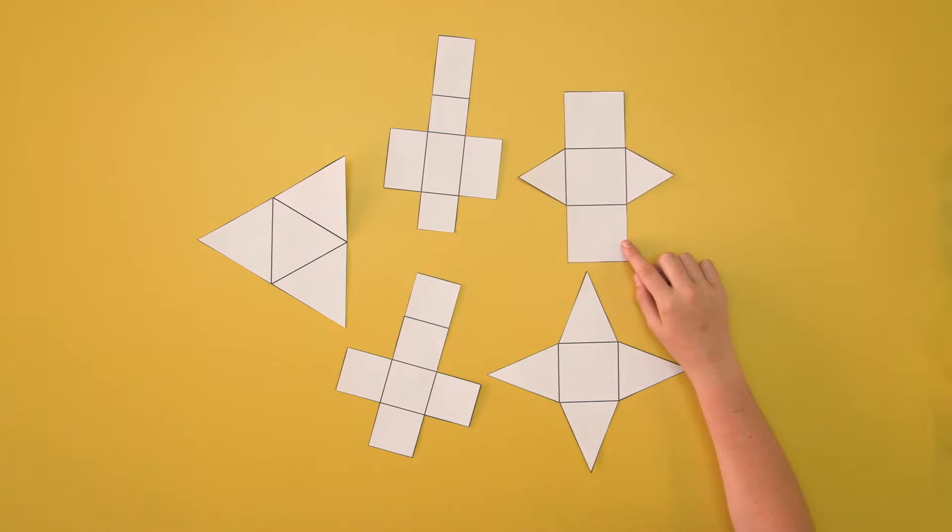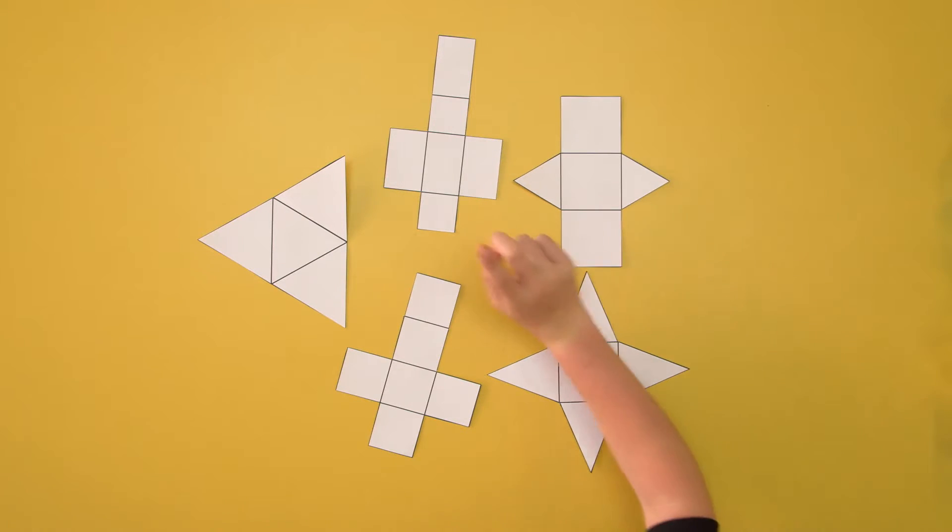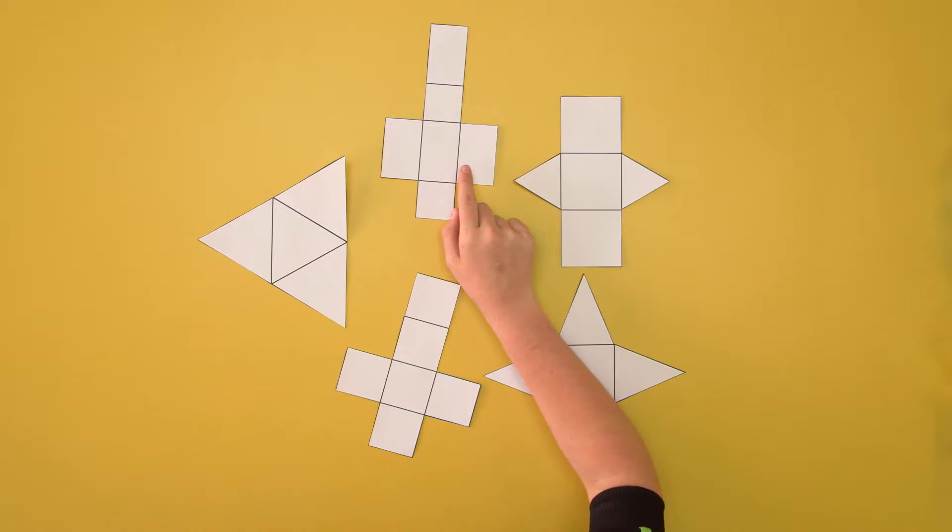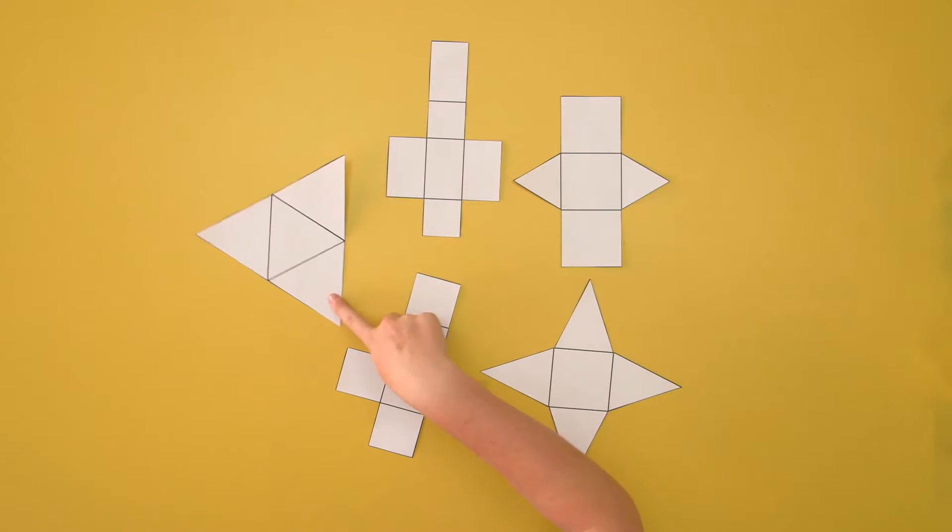This one is made up of three rectangles and two triangles. This one is made up of four rectangles and two squares. And this one is made up of just triangles.